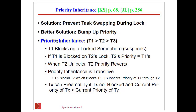Here is the case: priority inheritance. T1 blocks on a locked semaphore. If T1 is blocked on T2's lock, then T2 inherits T1's priority. The operating system knows this — it can keep track of who set the lock and who is currently using the resource, because of the signal and wait functions.